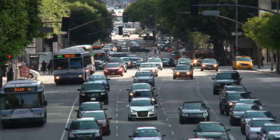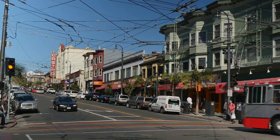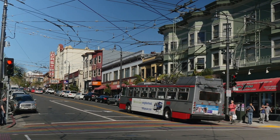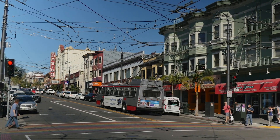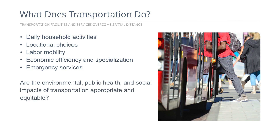Transportation facilities and services help us overcome spatial distances between activities and locations. Transportation systems help people take part in their daily household activities. They allow businesses and households to make locational choices across space. They provide labor mobility on a daily basis and labor relocation basis. And allow efficiency and specialization in the economy where regions can specialize in what they're good at and then engage in trade.